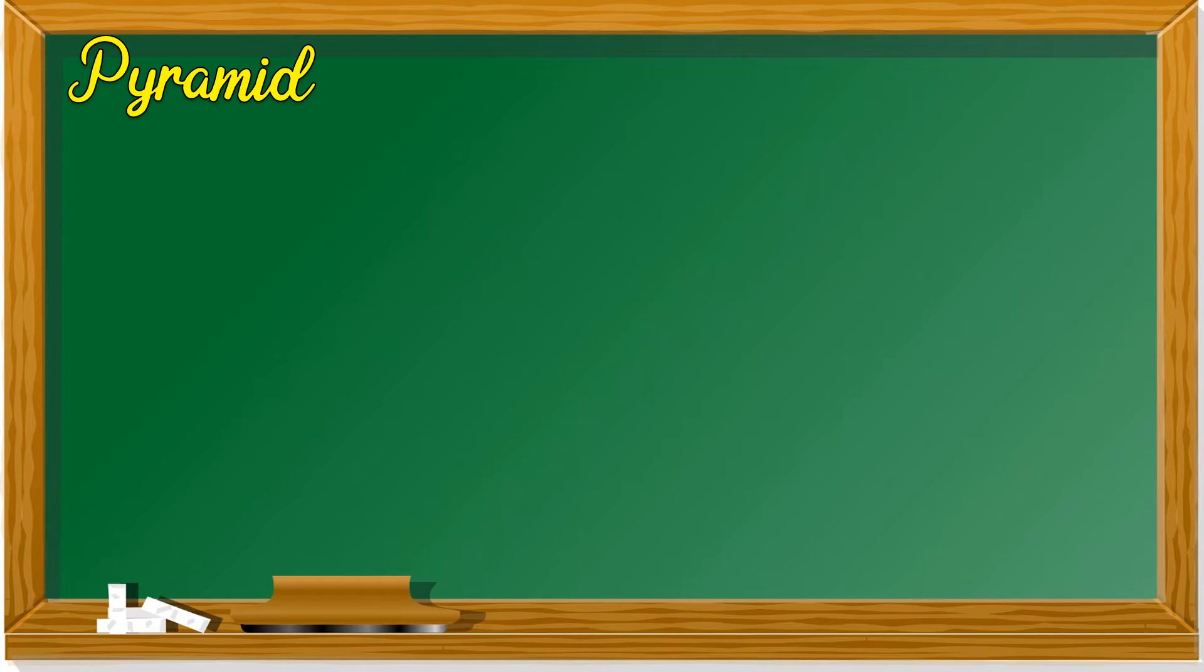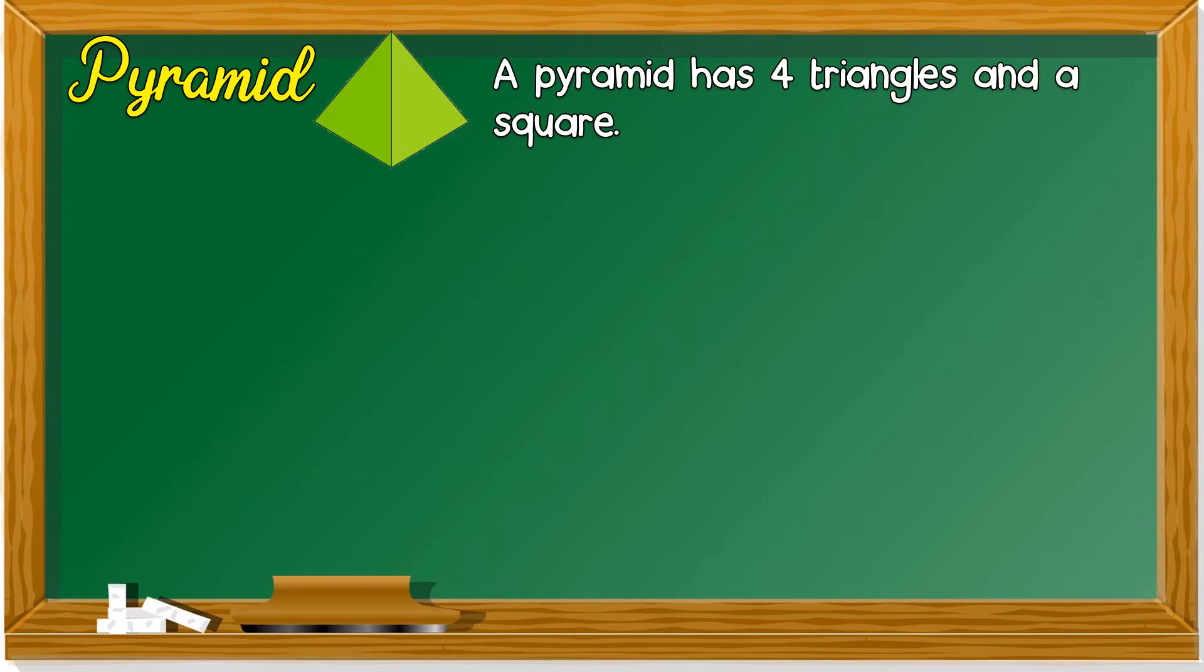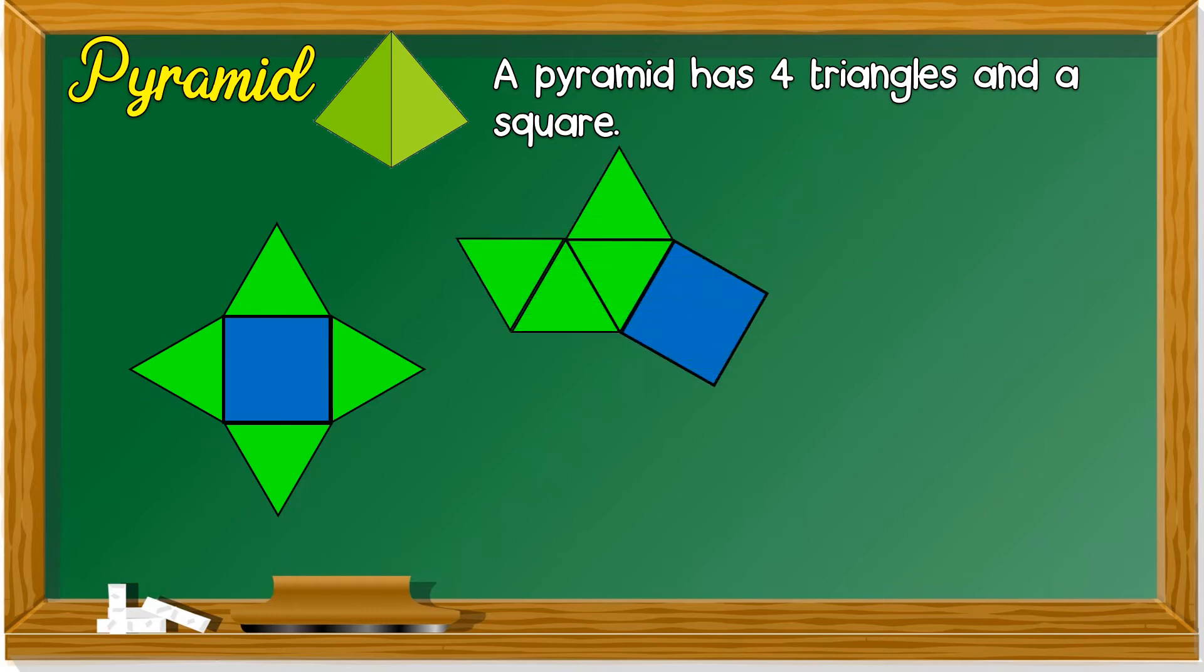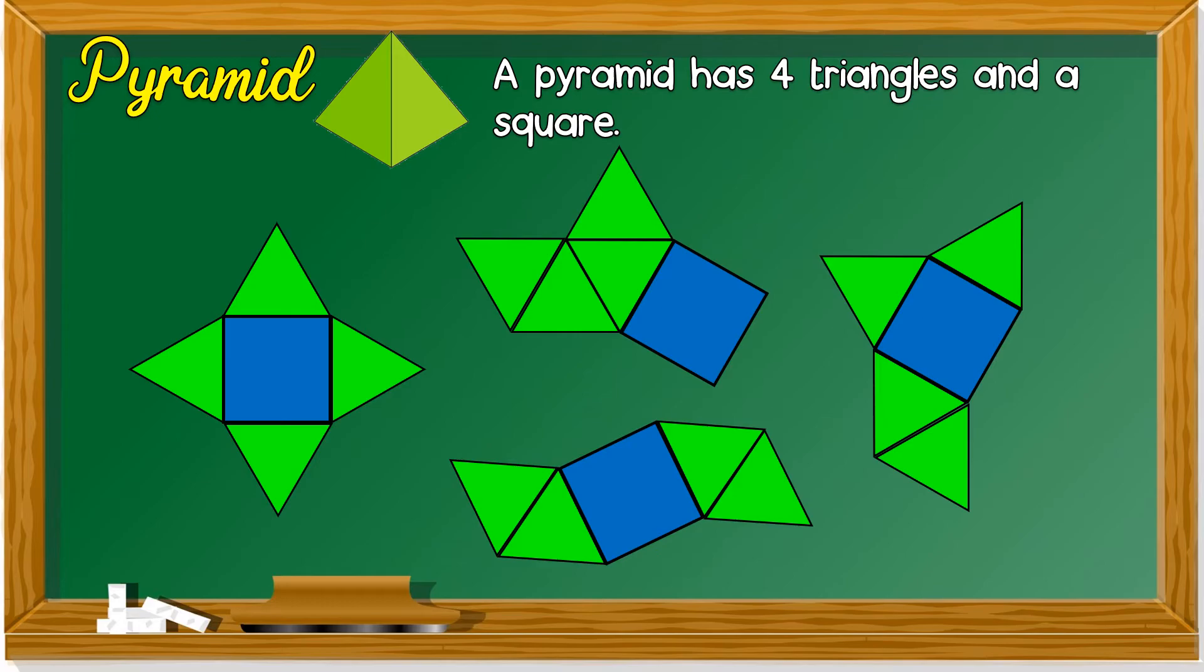Next, we have pyramid. Pyramid, remember, it has 4 triangles and a square base. These are the nets. I'm going to show you how to fold a pyramid's net.